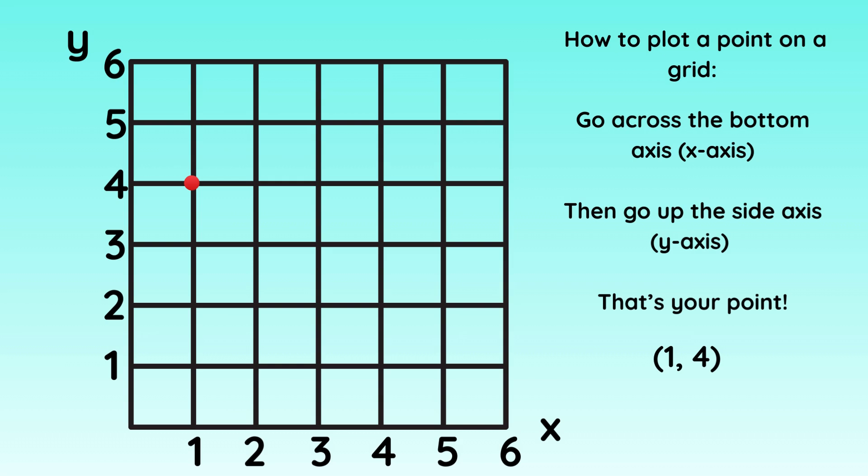So here we have some coordinates to plot: 1, 4. That is telling you to go 1 across and 4 up. You can see where the red dot is — that is your point. We've gone 1 across the x-axis and 4 up the y-axis.